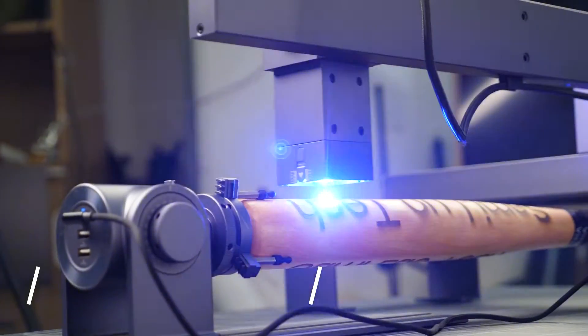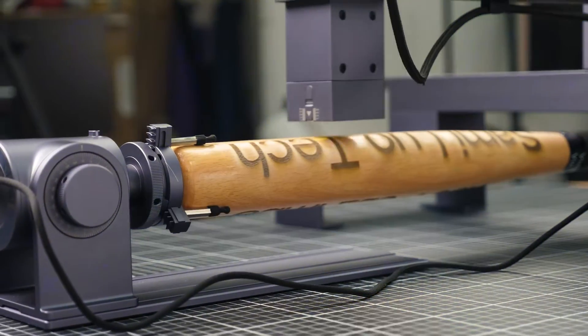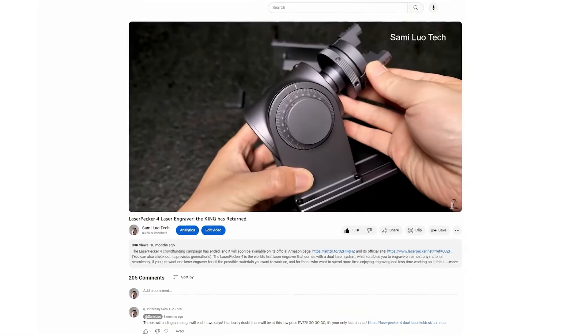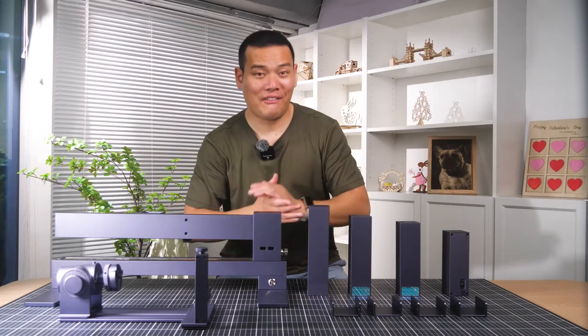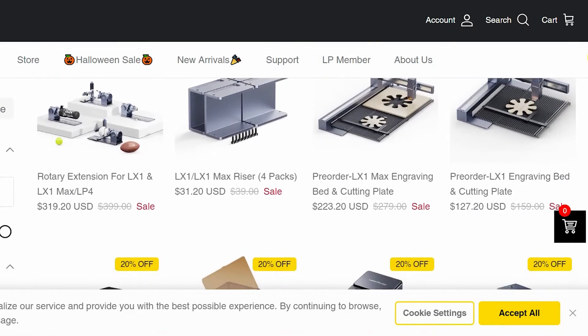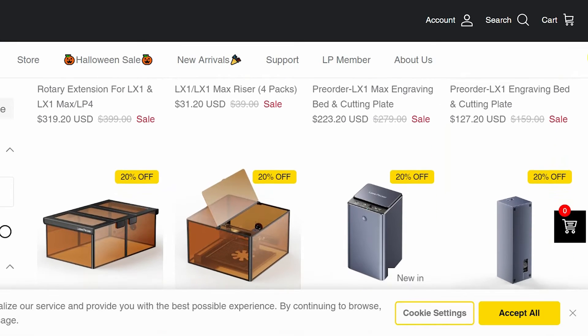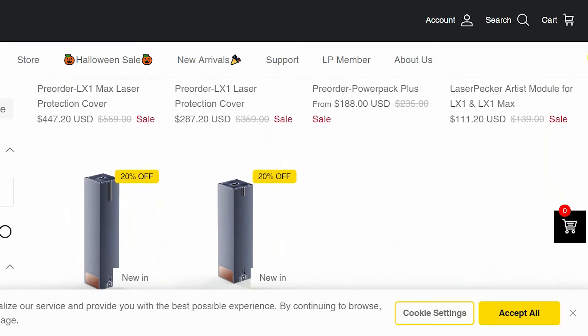And finally, for these cylindrical objects, they've got a rotary extension. I talked a little about that in my Laser Picker 4 video, so be sure to check it out if you want to learn more. So there you have it, folks. Those are all the accessories available for the LX1 series, and many of them are compatible with other laser engravers too.